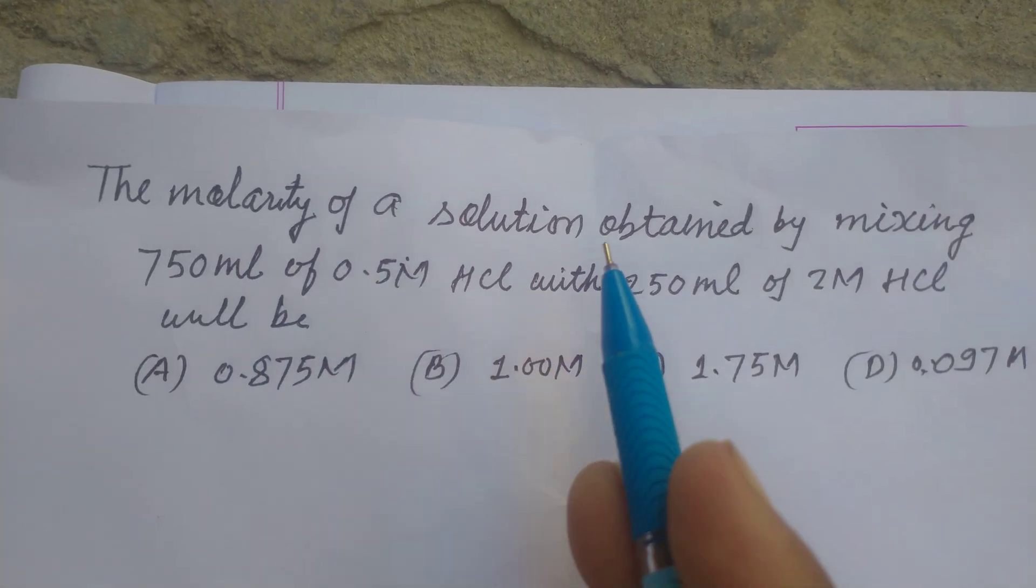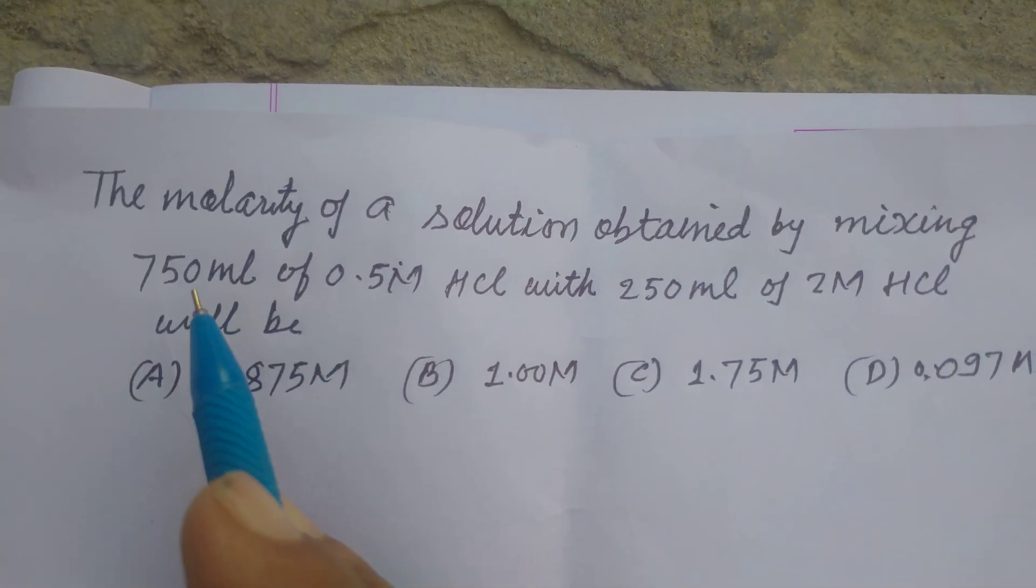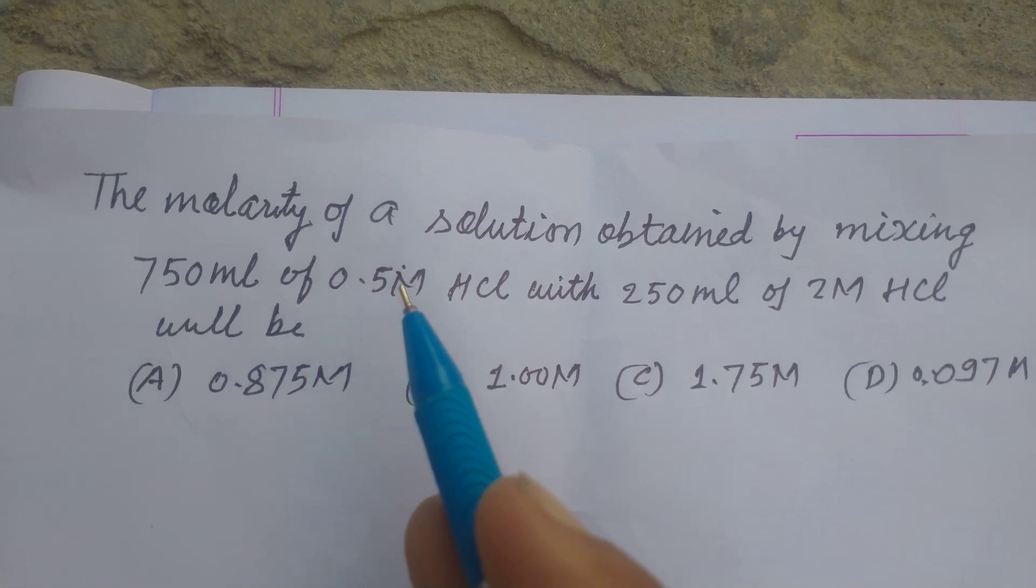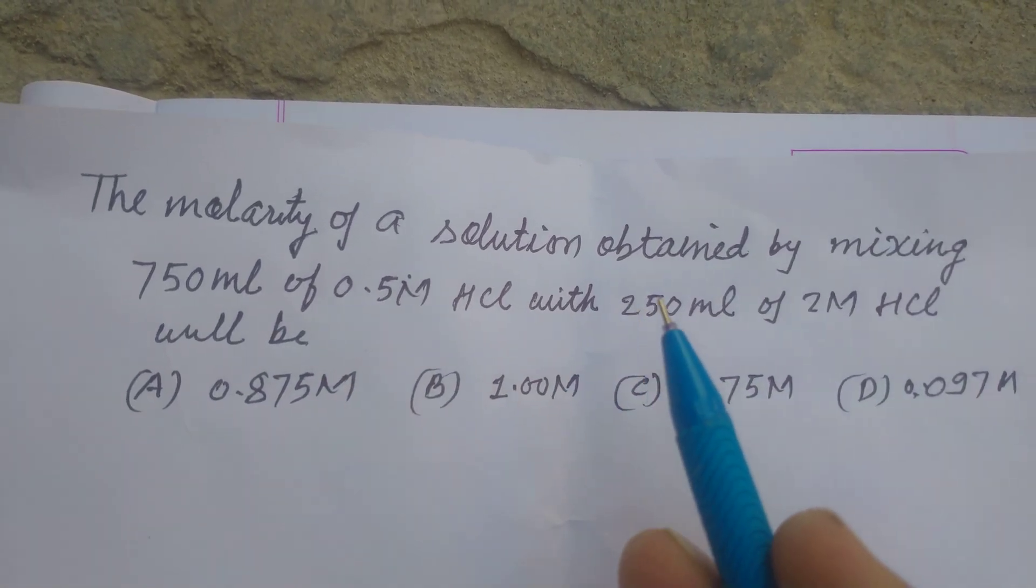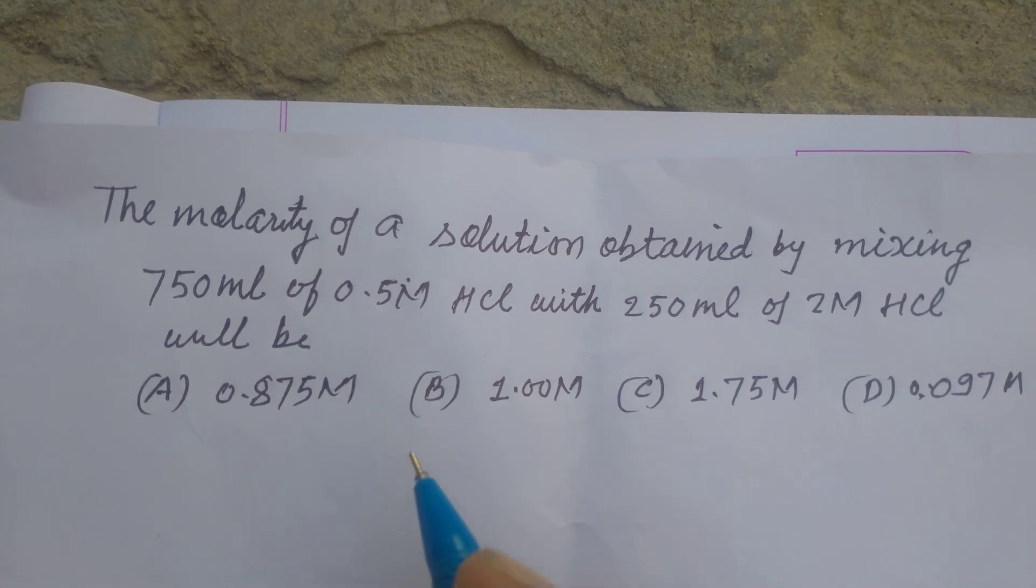The molarity of a solution obtained by mixing 750 ml of 0.5 M HCl with 250 ml of 2 M HCl will be.